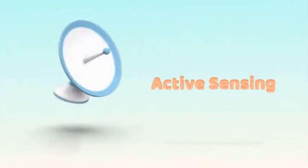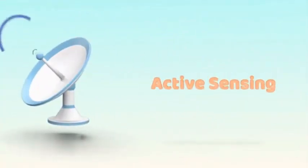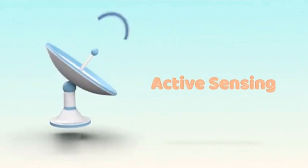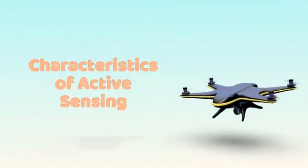Active sensing involves emitting energy into the environment and analyzing the returned signal. It provides control over the sensing process. Examples include radar systems and LIDAR.